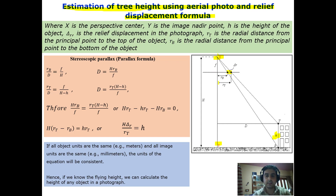rt is the distance from the principal point to the top of the object, and rb is the radial distance from the principal point to the bottom of the object. Delta r represents the relief displacement.